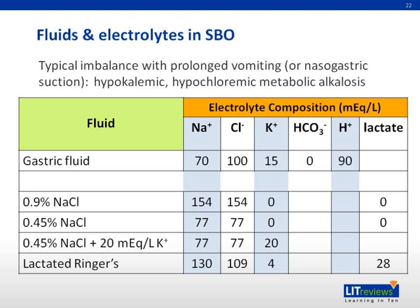The typical acid-base imbalance with prolonged vomiting or prolonged nasogastric suction without replacement of electrolytes and fluids results in hypokalemic-hypochloremic metabolic alkalosis. The table depicts electrolyte composition of gastric fluid and common intravenous solutions used. Keeping in mind the distinction between fluid resuscitation versus maintenance versus replacement, to manage volume loss in small bowel obstruction, normal saline can replenish depleted chloride levels and restore extracellular volume. To replace gastric losses, fluid that most closely resembles gastric composition, such as half-normal saline with potassium replacement, is used. There is no need for glucose replacement, although it may be indicated as part of maintenance fluid in the fasting patient.